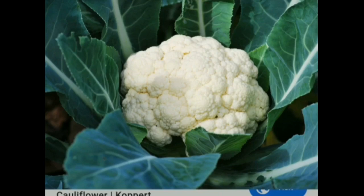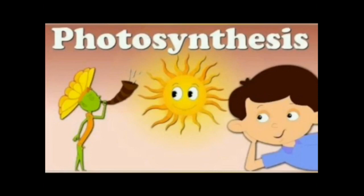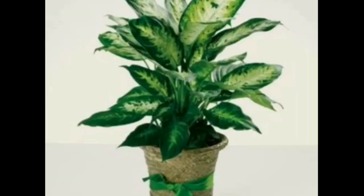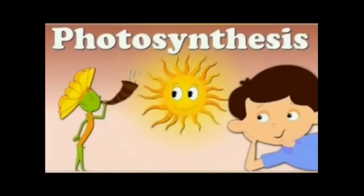The other product we get from photosynthesis is oxygen. The plants take carbon dioxide from the atmosphere and give out oxygen to the atmosphere — and that oxygen we need to live. So all living things on earth like plants, animals and human beings live by the process of photosynthesis.